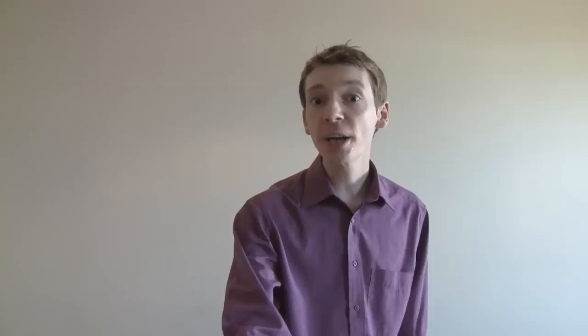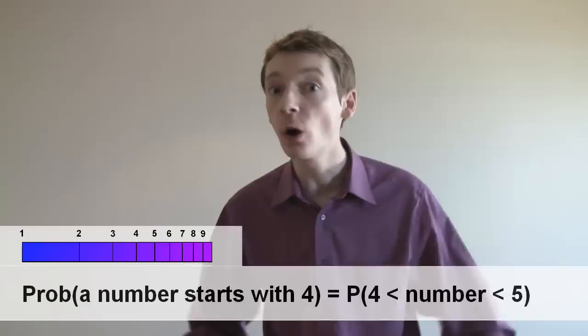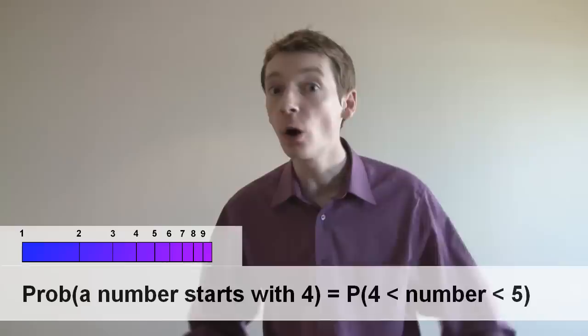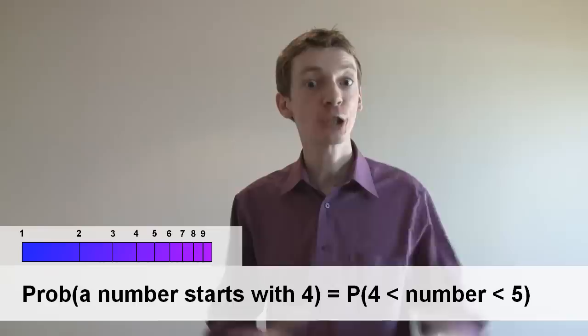Now we want to know the probability that a number starts with a particular digit. Because the pattern repeats, we only need to consider the numbers between 1 and 9. So imagine I threw a dart at this. What's the probability I'm going to hit a number beginning with a 4? Well, it's going to be the length of the section between 4 and 5 divided by the total length. Now the length of the section between 4 and 5 is log of 5 minus log of 4. And the total length, well, that's log of 10, which is 1.